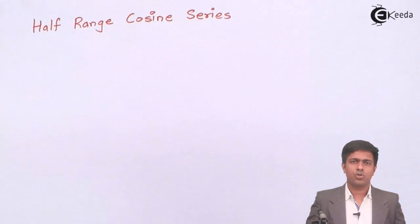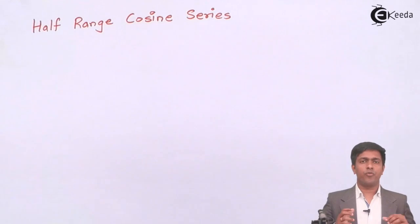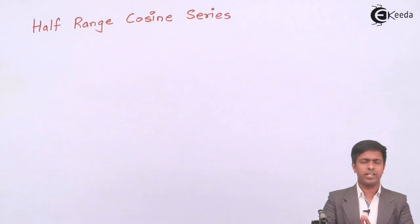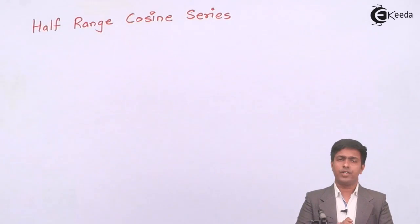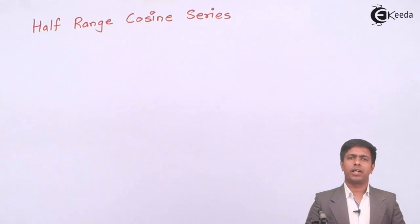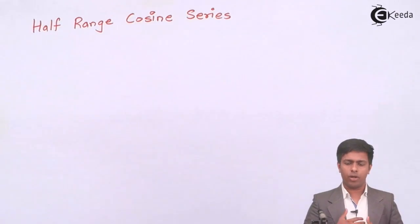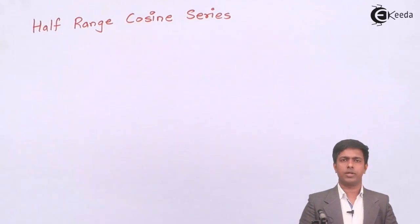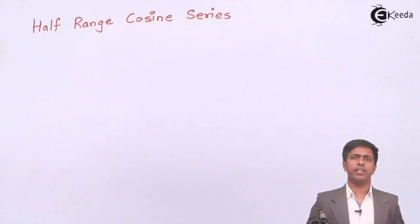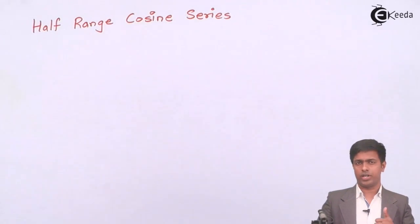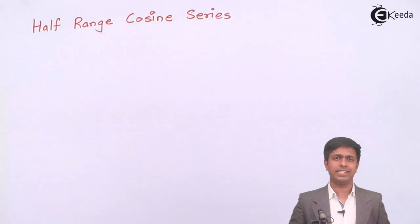Hello students. We are going to learn a very interesting concept of Fourier series which is very difficult for students to understand, but don't worry — I am going to make it very simple for you. The concept is called half range series, and there are two types: half range cosine series and half range sine series.